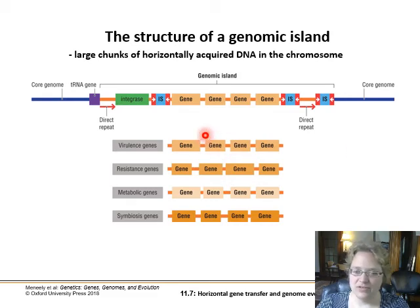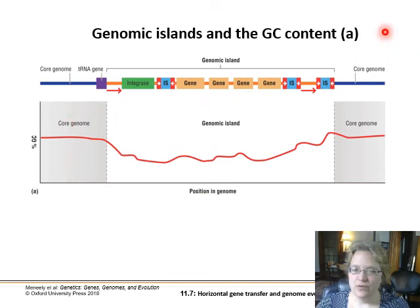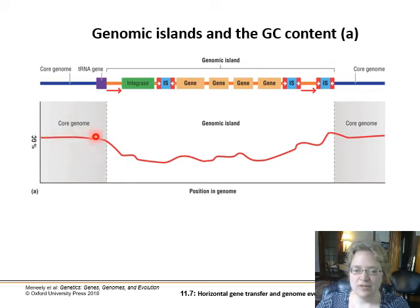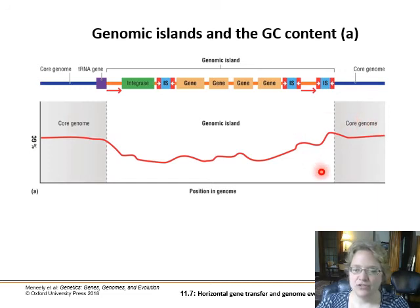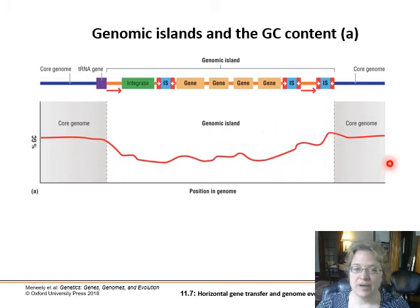One way we can tell where a genomic island occurs, especially in bacteria, is by looking at GC content. Bacteria have a high GC content in their core genome — a known percentage — and then all of a sudden you come to this genomic island and the GC content drops: it's more AT-rich, which looks viral. You can track it, and then see the regular GC-rich genome resume on the other side.